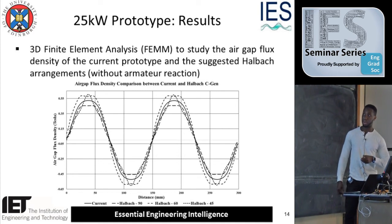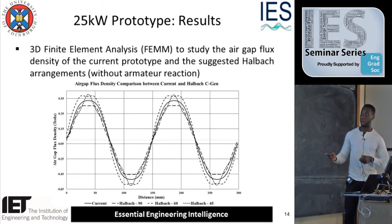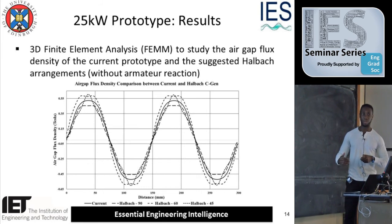I'm still trying to understand why this dip is so pronounced. I found that the bigger the air gap, the less you begin to see that dip. But what that also means is the lower the flux density. So it's a matter of finding a balance between minimizing the dip and maintaining a reasonable flux density.